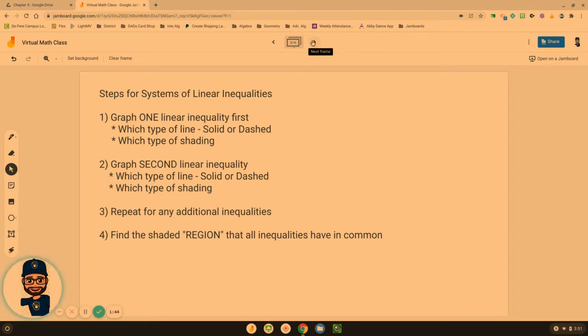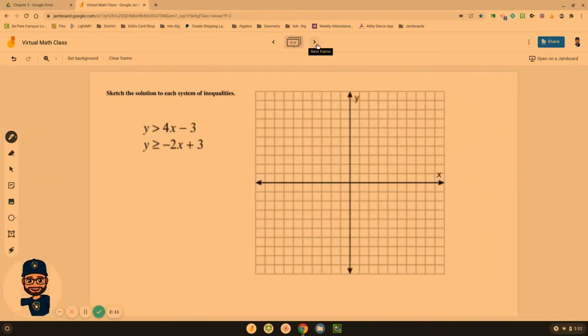The last step, number four though, is this is that feasible region. We're going to find a shaded region that all of the inequalities have in common. The key word being all inequalities. They all have to share that region. We need an answer, a region that shows where all ordered pairs, all answers will work in every single inequality that we have. Let's take a look at what this is going to look like.